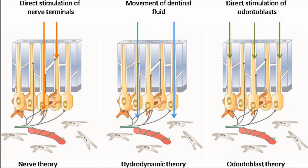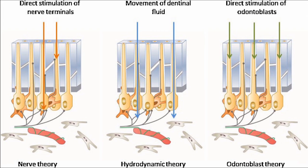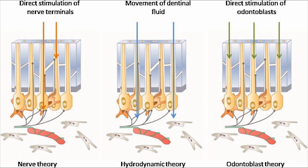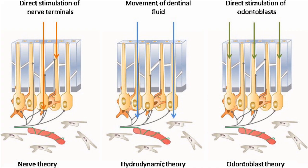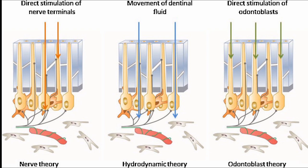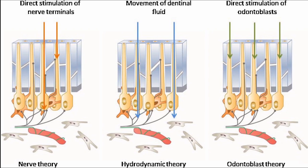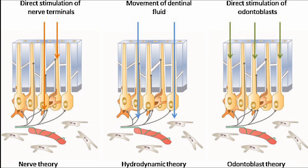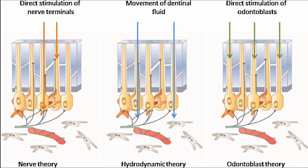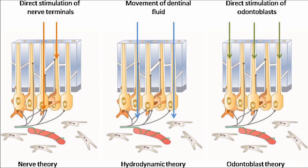Whenever there is a stimulus, that fluid moves. There is a flow of fluid inside the tubule — whether it goes towards the pulp or towards the dentine — but there is a fluid flow. This fluid flow is sensed by the free nerve endings that are around the odontoblasts, and this causes dentine hypersensitivity.